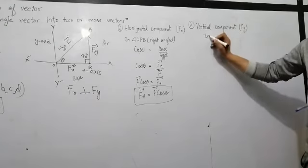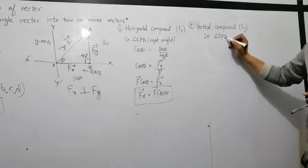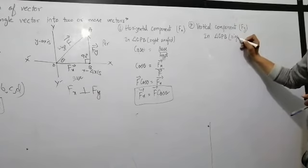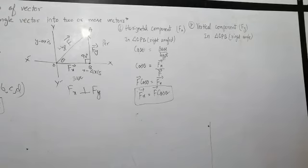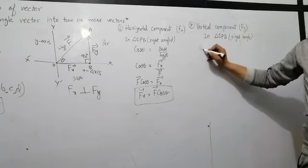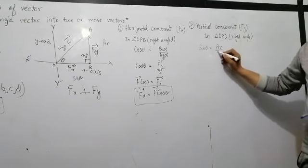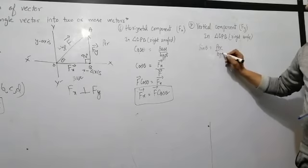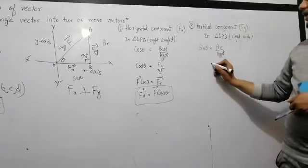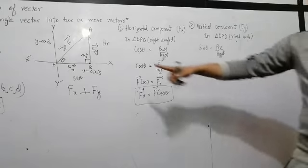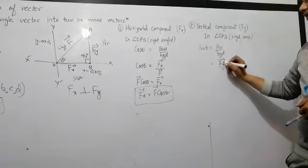Now you can see it in triangle OPB. This is a right angle triangle. Here you can use the formula for sine theta. Sine theta equals perpendicular divided by hypotenuse. The perpendicular vector is fy and the hypotenuse is F. Therefore, fy = F sin theta. This is the vertical component equation.